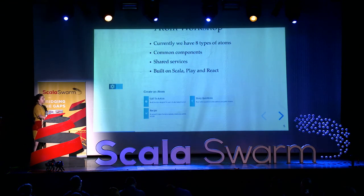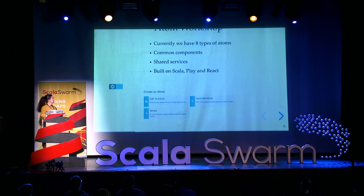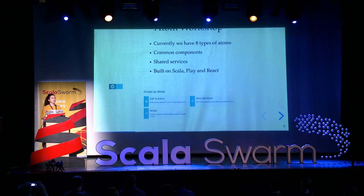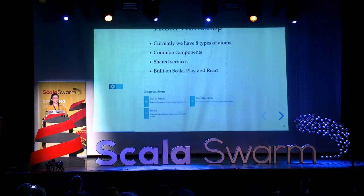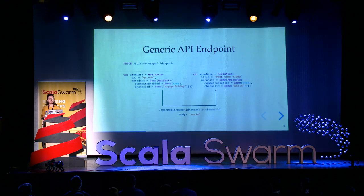We've built dedicated tools to support all of our types of atoms, and we are constantly being asked to support a new type of atom. But building a new tool every time a new atom is born is not sustainable. It takes our team around two months to build the tools from scratch, and that's a lot of development time. Plus we started to notice the similarities and the patterns — they're all built on Scala, Play, and React, and they all use the same features and the same services. So at the beginning of this year we decided to build a tool that will become the home of all of our atoms — a tool to rule them all. We called it Atom Workshop, and we decided to take our time to experiment and implement all the features we need. While building this tool we faced many challenges, and one of them was building a generic API endpoint, and that's what we're going to talk about today.